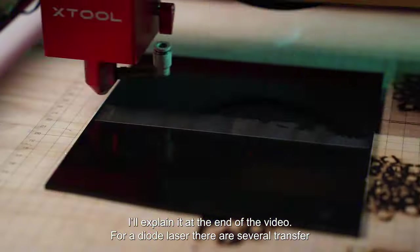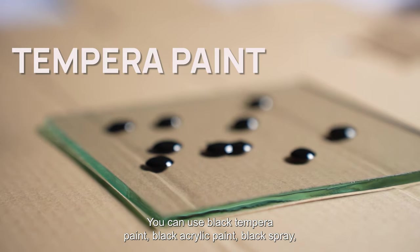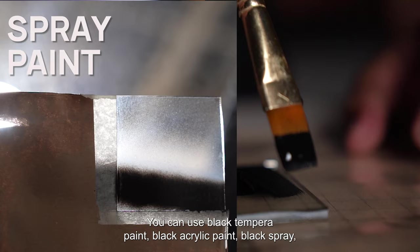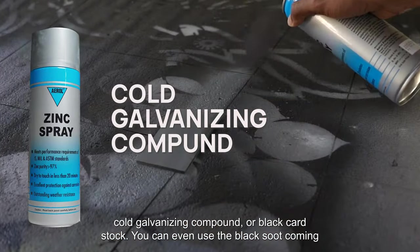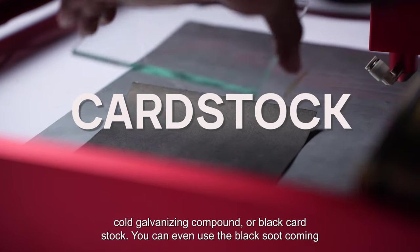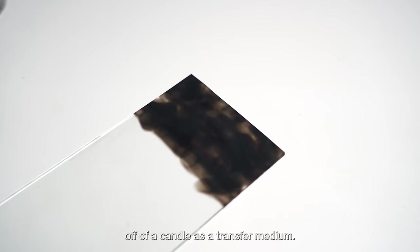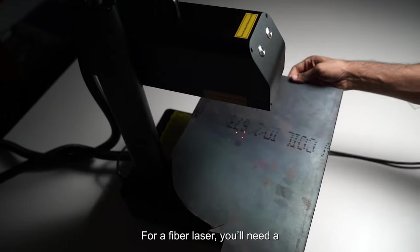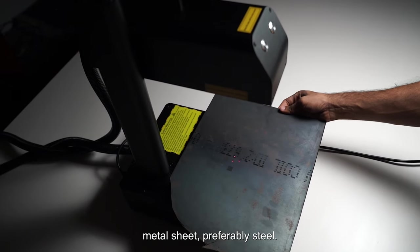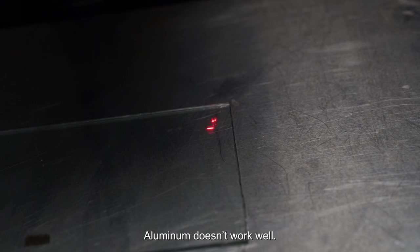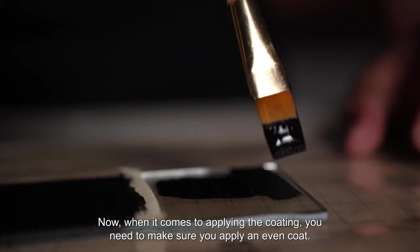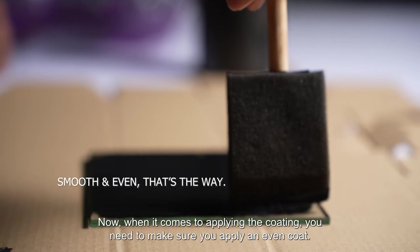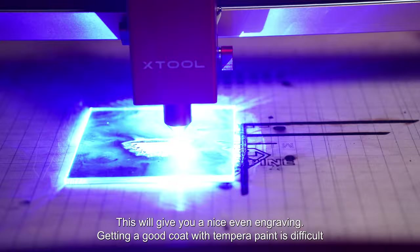For a diode laser, there are several transfer mediums you can use. You can use black tempera paint, black acrylic paint, black spray, cold galvanizing compound, or black cardstock. You can even use the black soot coming off of a candle as a transfer medium. For a fiber laser, you'll need a metal sheet, preferably steel. Aluminum doesn't work well. When it comes to applying the coating, you need to make sure you apply an even coat. This will give you a nice even engraving.